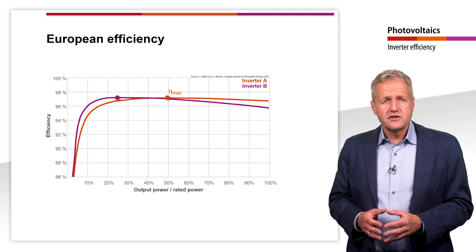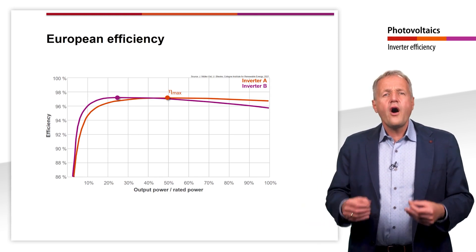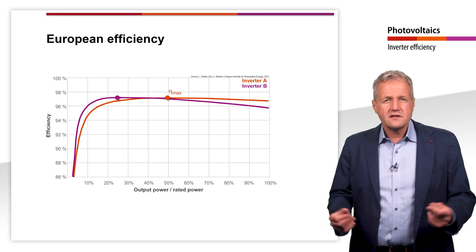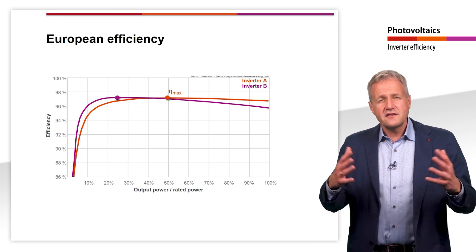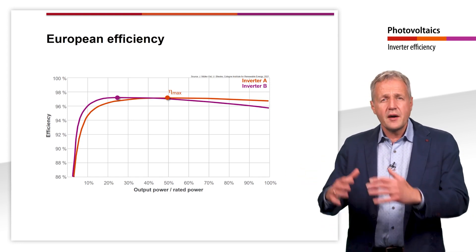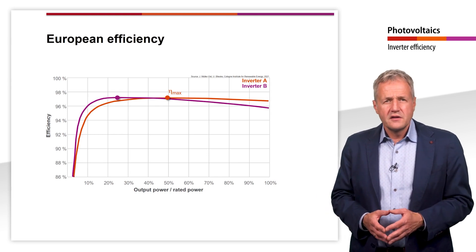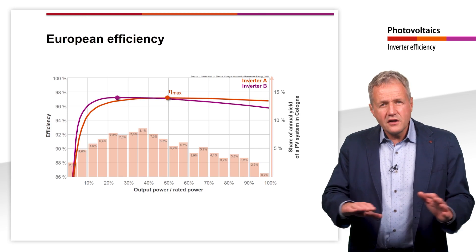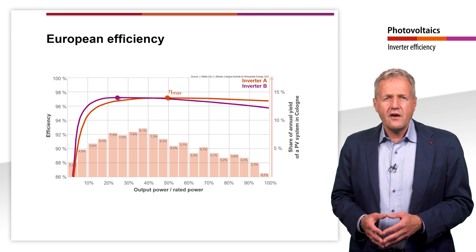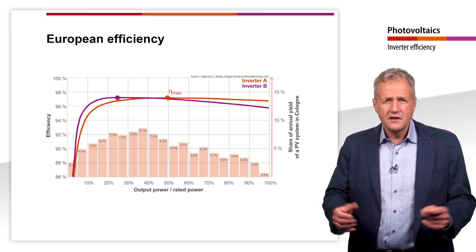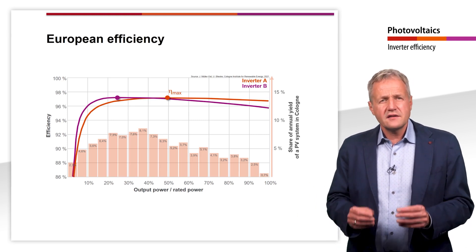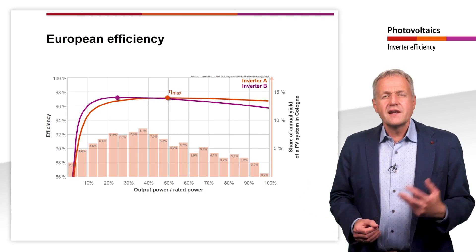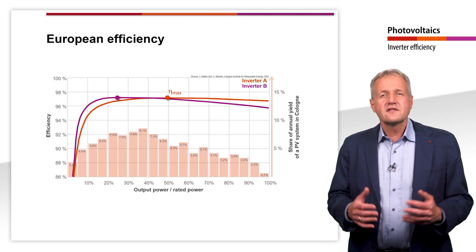Hence, we need an indication of what efficiency can be achieved with each of the two inverters over the course of a year. But how can such an average efficiency be determined? First of all, we need to know how often the different output powers are likely to occur over the course of a year. This depends very much on the irradiation and thus on the location of the PV system. A plant in the Sahara will operate much more frequently at its rated power than a plant in Germany. Looking at the example of a plant in Cologne, Germany, we see that the inverter delivers only a fraction of the annual yield at its nominal power. Most of the time, the inverter is operated in the lower partial load range. This diagram clearly shows how important a good partial load behaviour of the inverter is at this location.